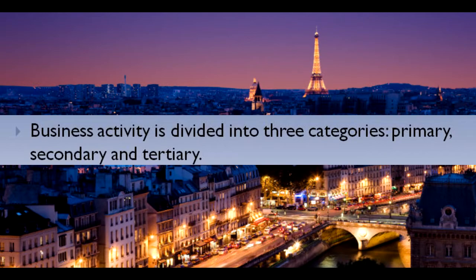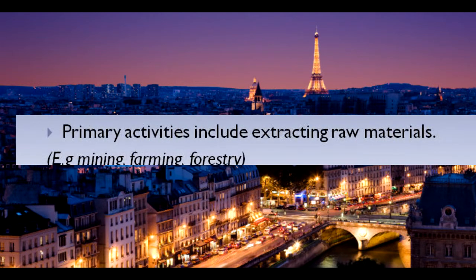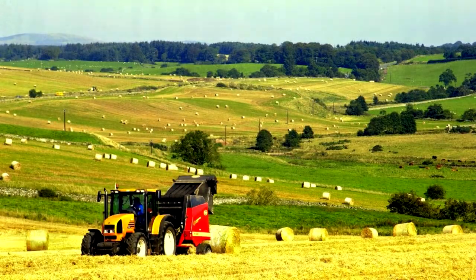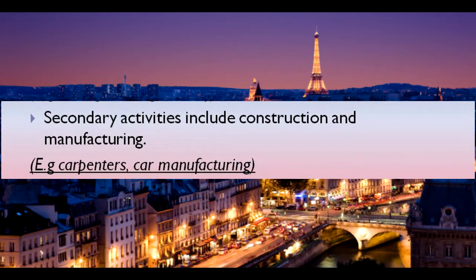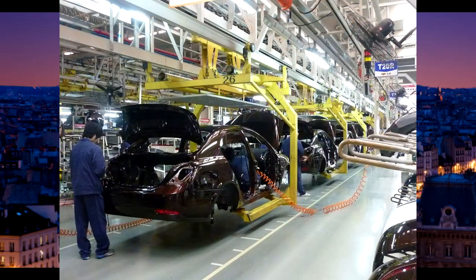Well, business activity is divided into three categories: primary, secondary and tertiary. Primary activities include extracting raw materials, for example, mining, farming and forestry. Secondary activities include construction and manufacturing, for example, being a carpenter or working in car manufacturing.